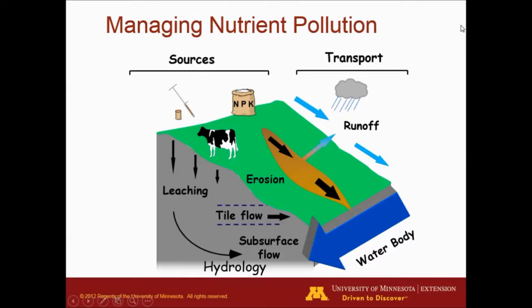Another issue related with manure and nutrient management is not only the amount applied and whether we base it on nitrogen or phosphorus rates, but also many issues related with sources—whether it's manure, commercial fertilizer, or soil sampling—as well as transport processes like runoff and leaching, where we apply it, and when we apply it. If we apply manure and there are rainfall events, there might be runoff following that application, or if we're applying in the winter on top of snow, a lot of that manure is probably going to be readily available for runoff in the spring. Whether we apply close to water bodies or tiles is also an issue.